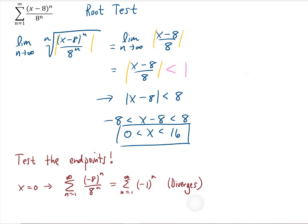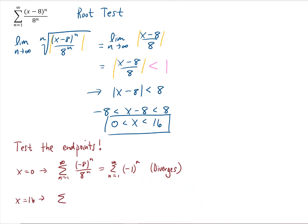Now let's test x equals 16. Plugging x equals 16 into our sum just gives us 8 to the n in the numerator which cancels with the denominator. And we just get the sum of 1 as n goes from 1 to infinity. Again, this term 1 does not approach 0 as n approaches infinity. So we're just adding an infinite number of 1's together. That is a divergent series.